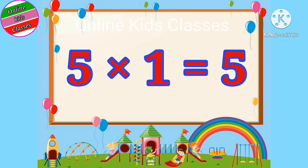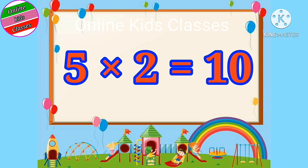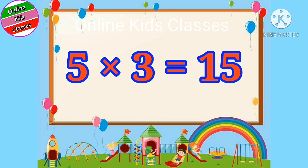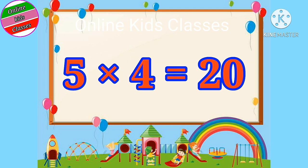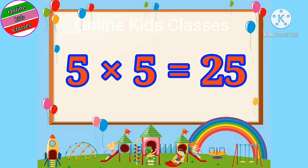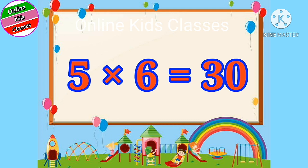Five ones are five. Five twos are ten. Five threes are fifteen. Five fours are twenty. Five fives are twenty-five. Five sixes are thirty.